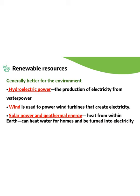How do we use renewable resources? For example, we can use hydroelectric power, which is the production of electricity from water power. We obtain energy from moving water by damming rivers. Dams can generate electricity by changing the flow energy of water into electric energy.